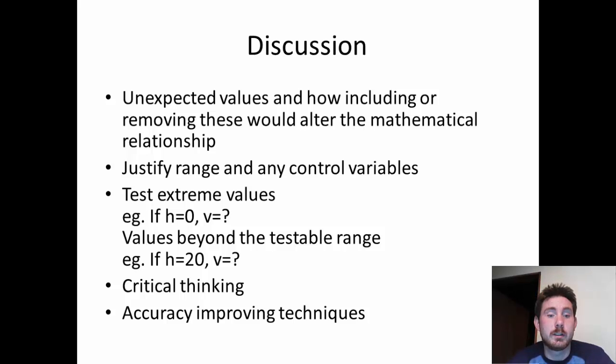You should mention any techniques you've used to increase or improve accuracy within your experiment. Often these might be around repeats and averages or multiple measurements and dividing in order to reduce percentage uncertainty. If you repeat an average, then the reason for repeating an average is important to know. And when you do that, it basically lets you identify outliers. Of course, you can't do that with just two samples for each value of independent variable. You would need at least three in order to be able to identify one of those as being an outlier.